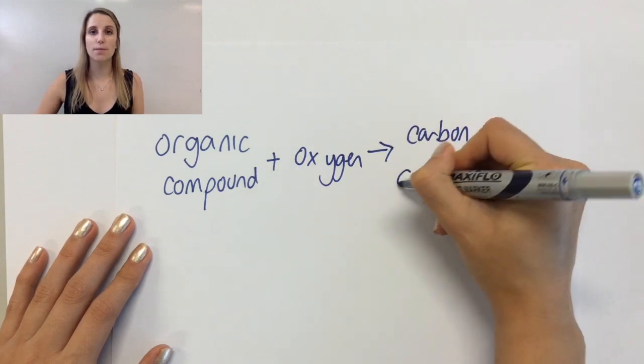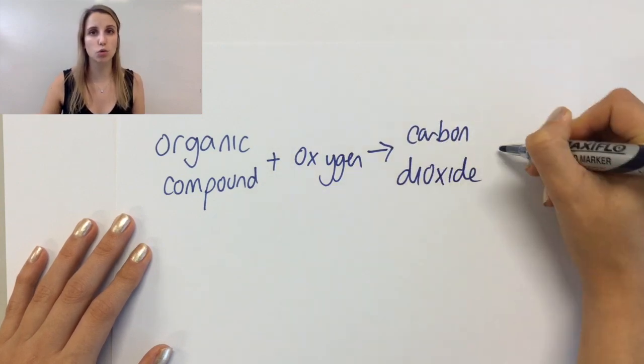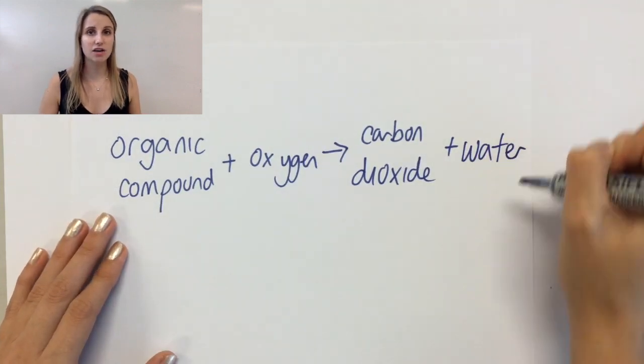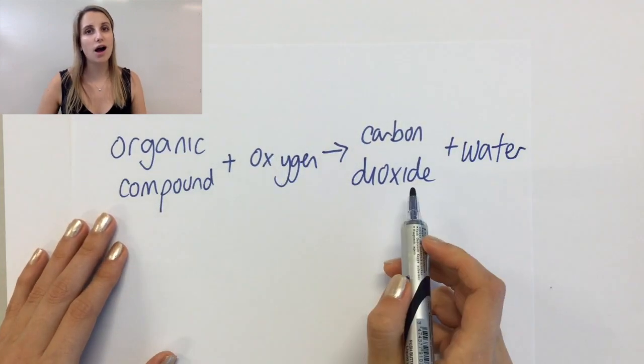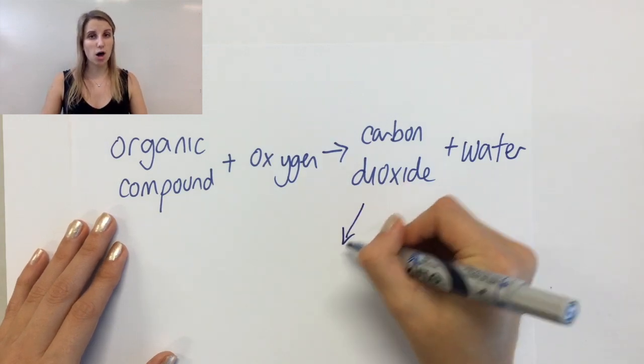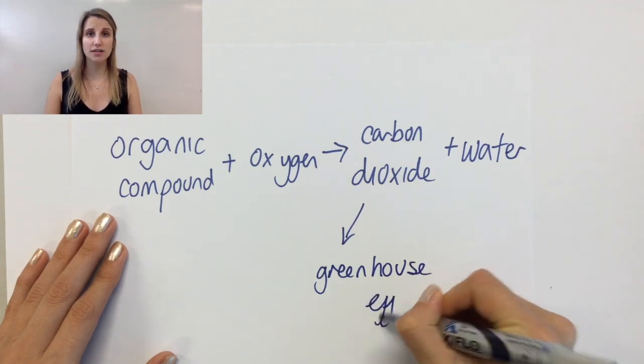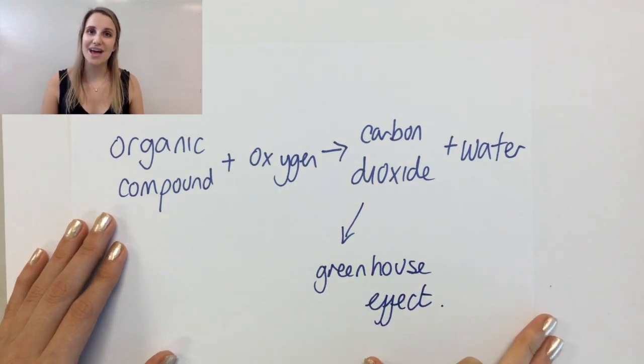And if it's complete combustion, then that means you're going to make carbon dioxide and water every single time. So every time you burn any of those fossil fuels, you make carbon dioxide and water. And that carbon dioxide can then lead to problems like the greenhouse effect that you'll learn about elsewhere in your syllabus.